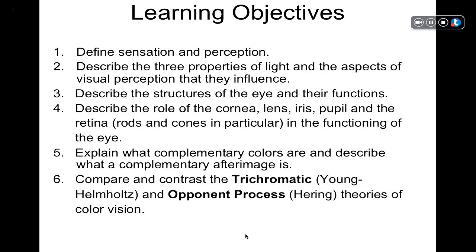Learning objectives covered in Lecture 1: Define sensation and perception. Describe the three properties of light and the aspects of visual perception they influence. Describe the structures of the eye and their functions, including the cornea, lens, iris, pupil, and retina with focus on rods and cones. Explain complementary colors and complementary afterimages. Compare and contrast the trichromatic theory — Young-Helmholtz — and the opponent process theory — Hering — of color vision.